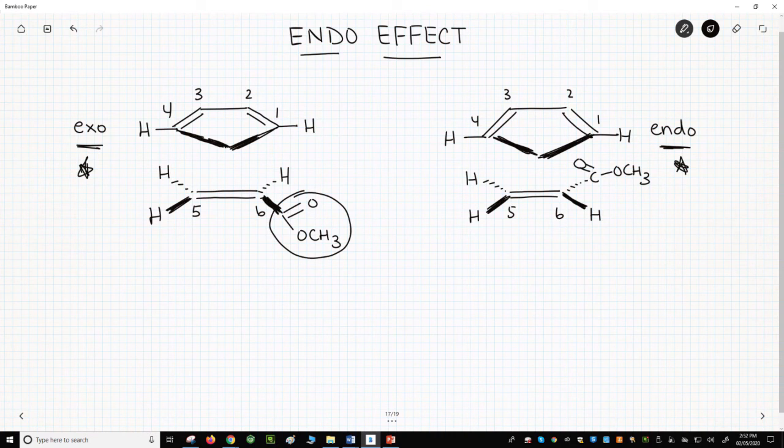In the endo diagram on the right, the EWG on the dienophile tucks under the diene. This looks crowded, sterically hindered. In fact, it is.